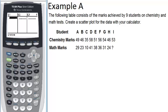I'll make chemistry marks my list one and math marks list two. So for chemistry marks, I'll start by typing in 49 and then 46 and so on until I've entered in everything up to H. I don't want to enter in I because I don't know a corresponding value for 53, so I only want to enter in data where I know both values.